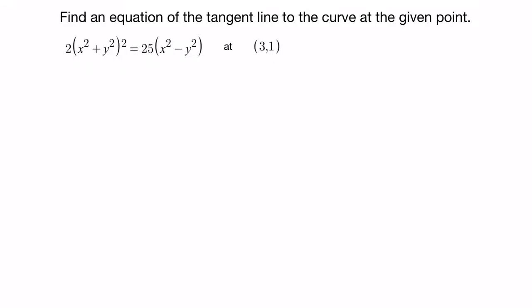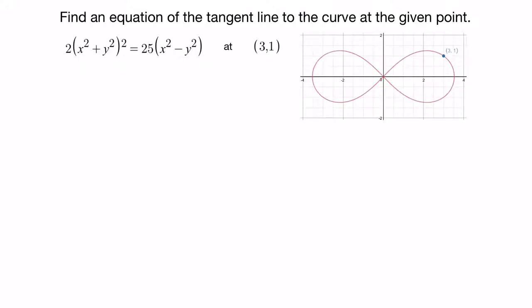In this question we have to find the equation of the tangent line to this curve at the point. Using Desmos we can see what the curve looks like — it looks like an 8 on its side, or the infinity sign. This is an example of what's called a lemniscate curve, which is kind of cool. We can also see that (3,1) is on the curve, and a tangent line there would have a negative slope.